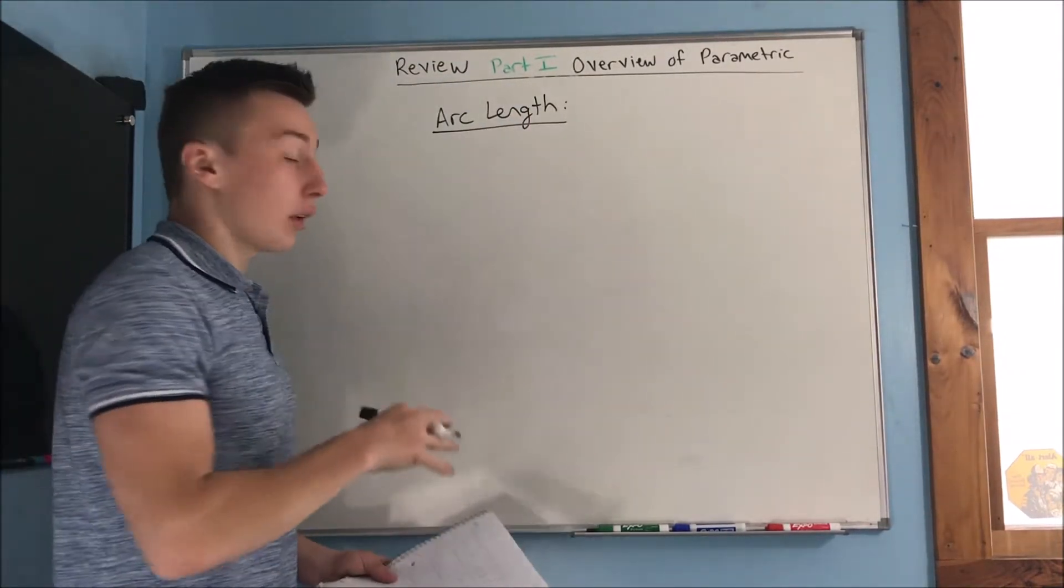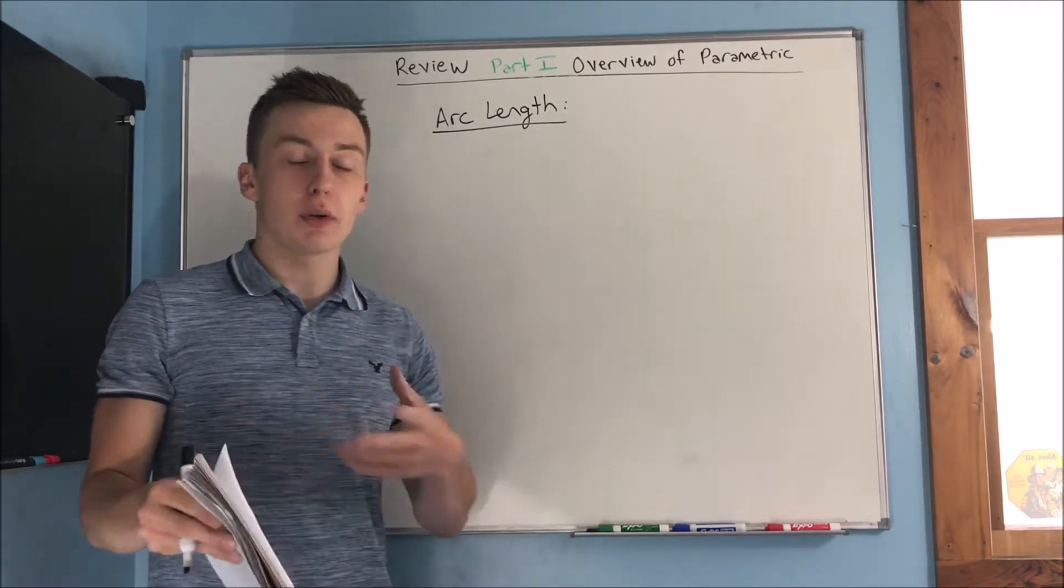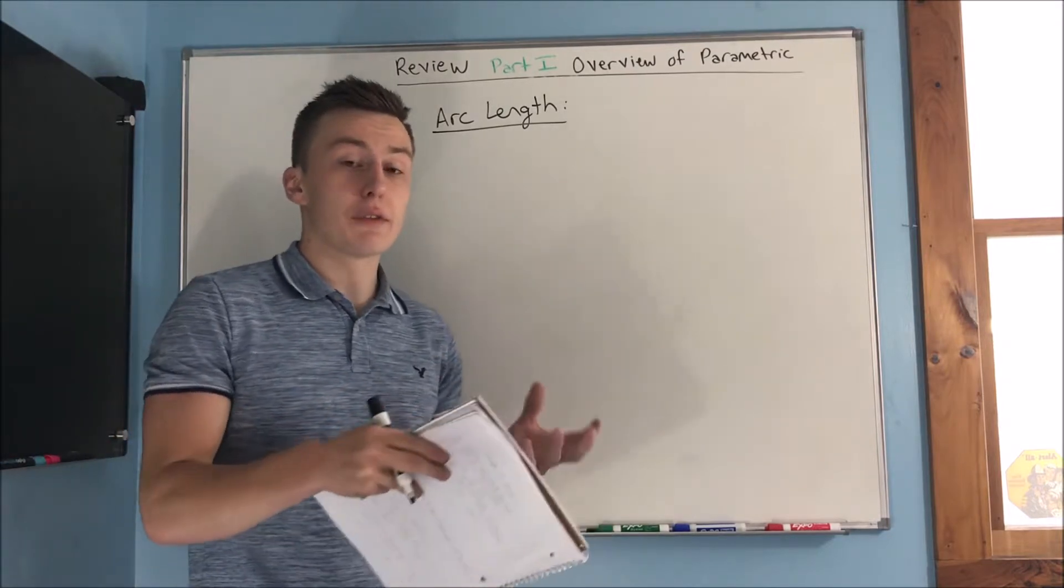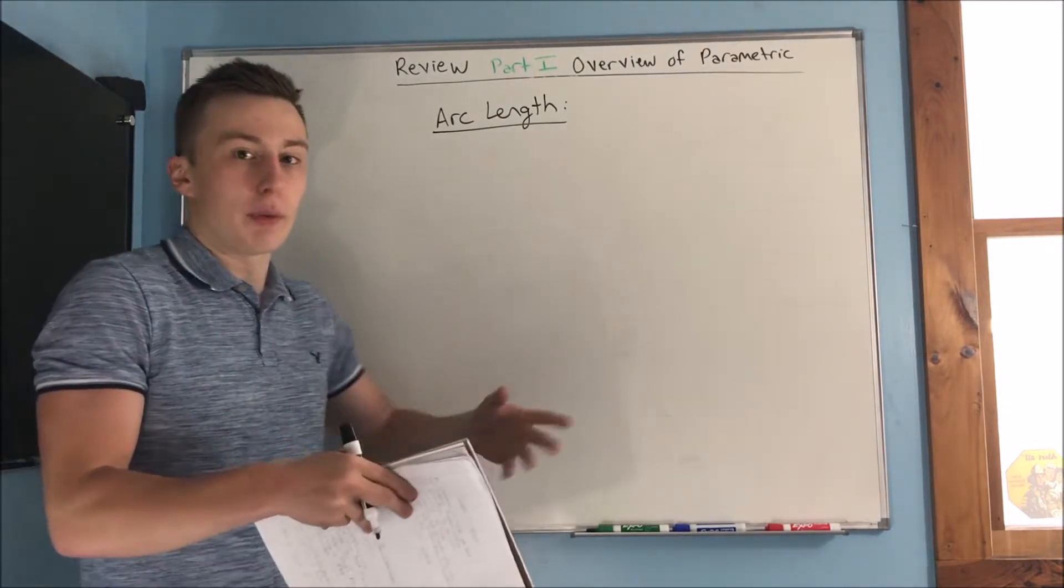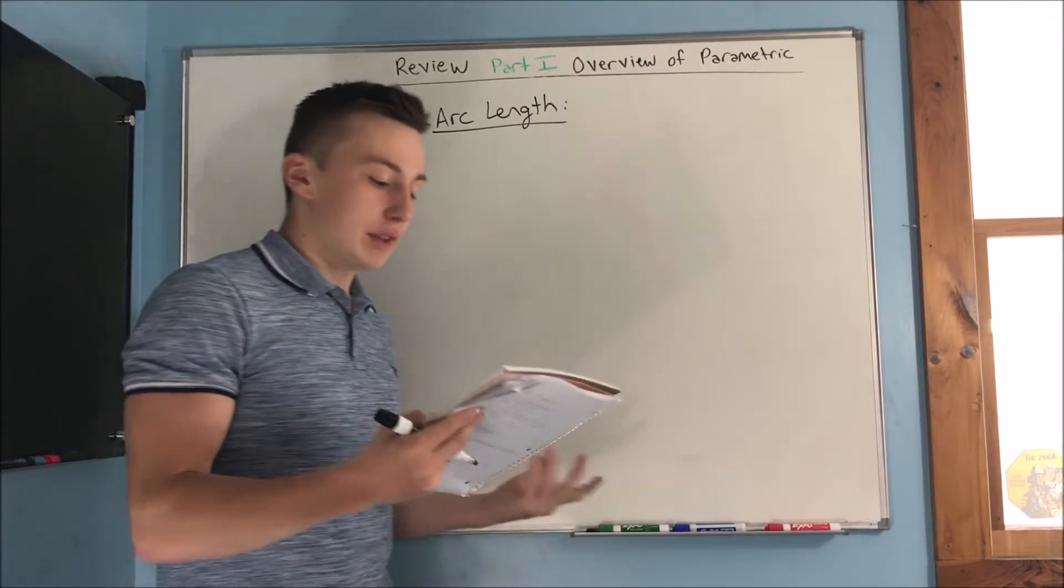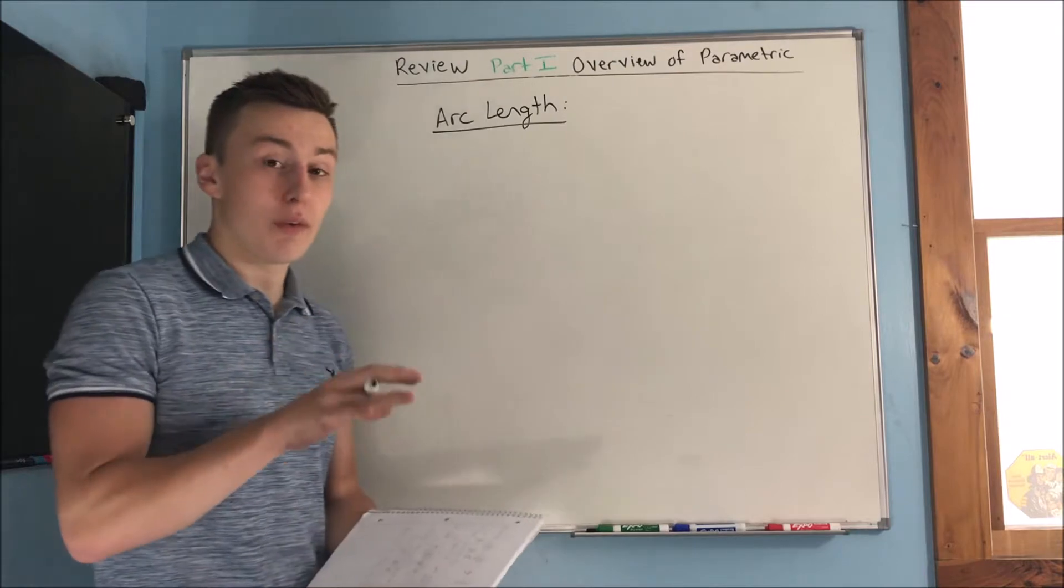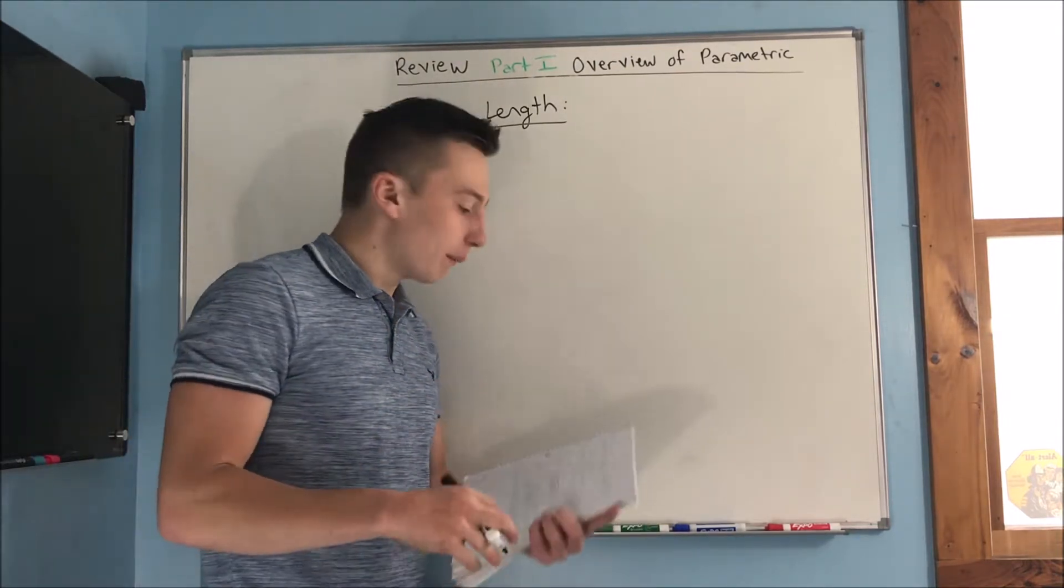Now next is arc length, and for arc length and surface area for both parametric and polar, they all kind of start from the arc length and surface area that we learned about before when we weren't dealing with parametric or polar, when we were just dealing with y's and x's. You can kind of start to see the transformation.